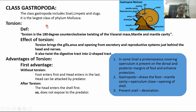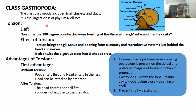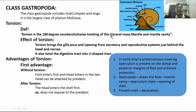What is torsion? Torsion is the 180-degree counterclockwise rotation or twisting of three things: the visceral mass, the mantle, and the mantle cavity.